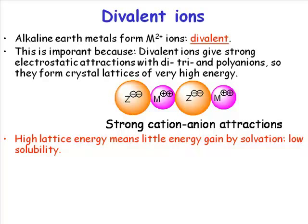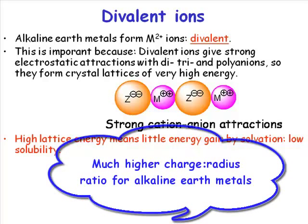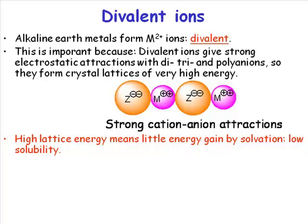The charge-to-radius ratio for the alkali metal ions was quite low, but the charge-to-radius ratio for the alkaline earth metals is much higher, because they're that bit smaller in the same period and they've now got a two-plus charge. What that translates into is very strong inter-ionic interactions — the Coulombic forces between these ions are very, very strong. That means the lattice energies are very, very high, and if the lattice energies are very high, you have very high melting points for the salts.